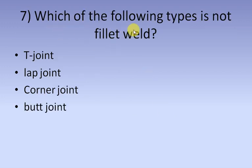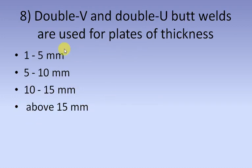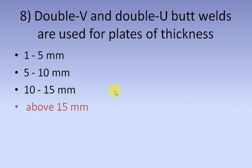Which of the following is not a fillet weld? It is a butt joint. V and V butt welds are used for plates of thickness above 15 mm.